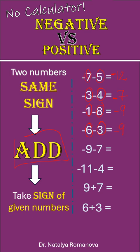Minus. Negative 9 minus 7. 9 plus 7 give us 16, and we keep minus, negative 16.